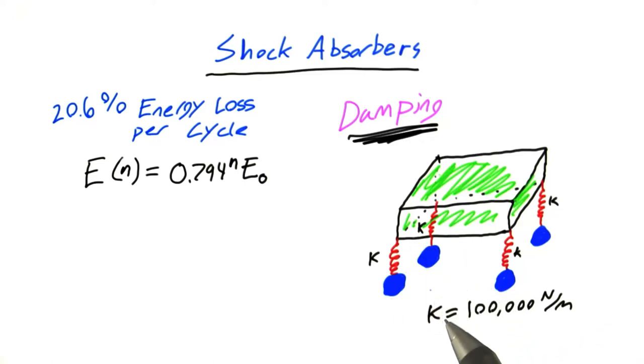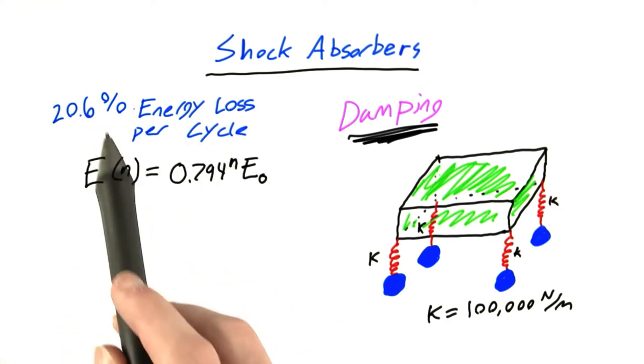So in order for us to calculate how many cycles it takes for the amplitude to decay to one half its original value, we need to know the relationship between the amplitude and the energy value, which we know decays by 20.6% per cycle.